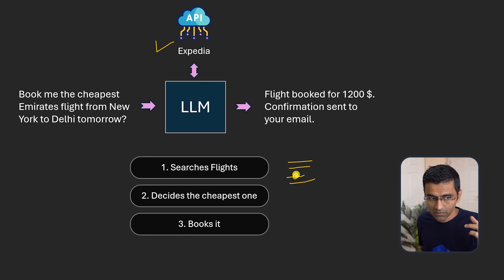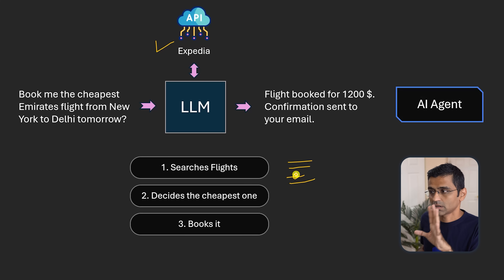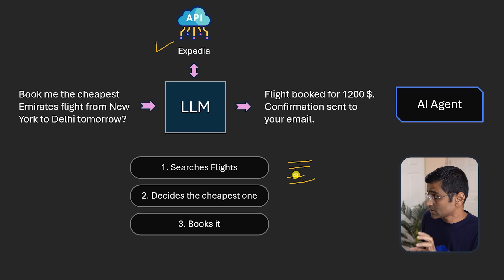Previously, when we were looking at a Q&A chatbot, it's just simple question and answer. Whereas an agent will perform an action autonomously.